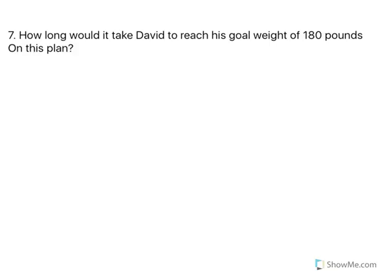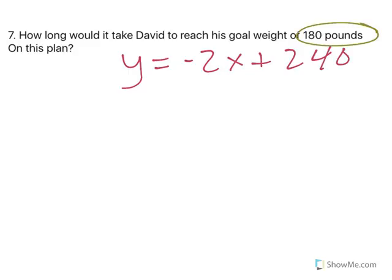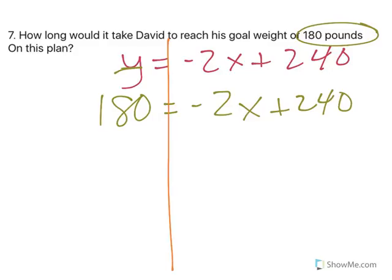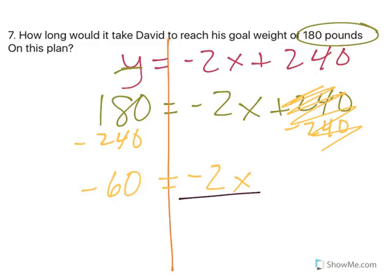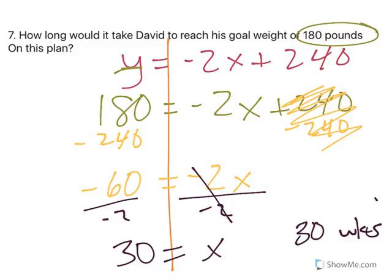How long will it take David to reach his goal weighing 180 pounds on this plan? Okay, well, y equals negative 2x plus 240. 180 represents his ending weight. And y is his ending weight. So, 180 is the goal, how many weeks have to go by on this plan? Well, if you solve this, we have to do the same thing to both sides. We need to get x by itself. So, if I subtract 240, you always want to work farthest away from your variable and then get closer. So, 240 minus 240 gives me 0. That leaves me with negative 2x. And 180 minus 240 on this side gives me negative 60. I now divide both sides by negative 2. And x equals 30. So, that means it will take David approximately 30 weeks to reach his weight loss goal of 180 pounds.